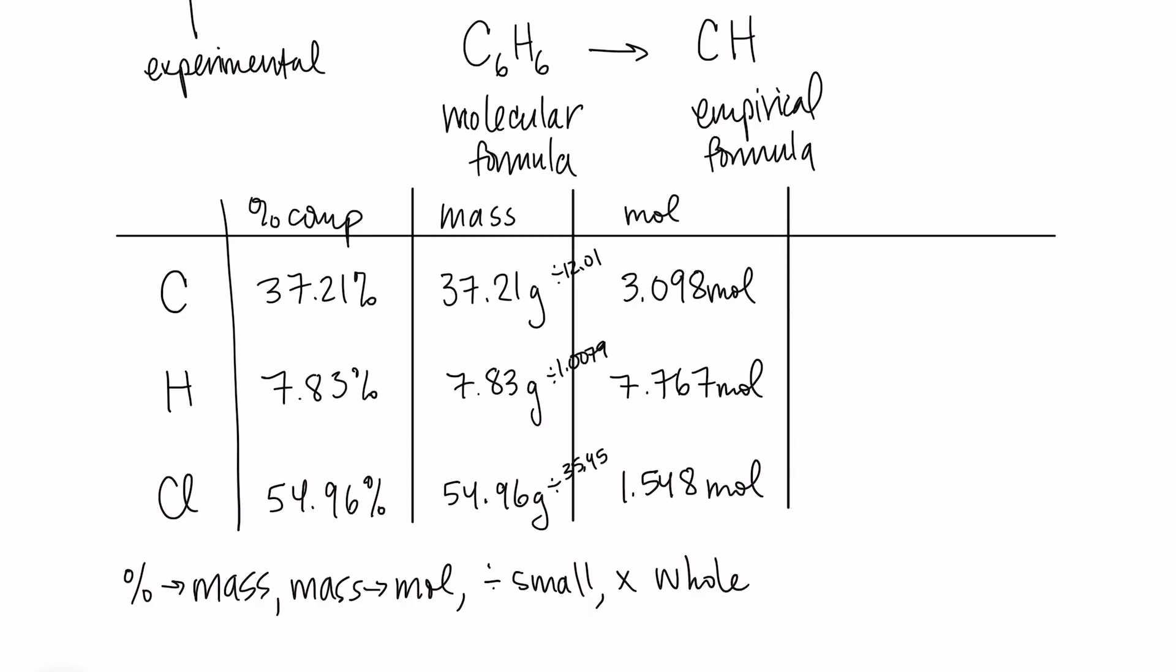We did percent to mass, mass to moles. Now we have to divide by the smallest number. Of these guys, 1.548 is the smallest number. So I'm going to divide each of them by 1.548. That gives me my ratio. This one gives me 2.0. This one gives me 5.01. And the last one gives me 1.00. It'll always be 1 for the smallest.